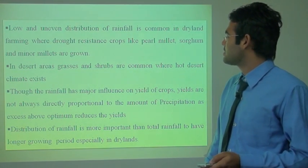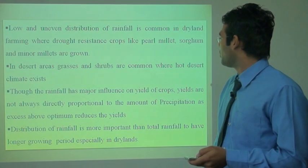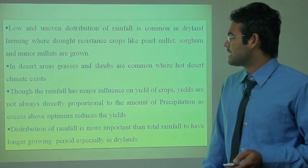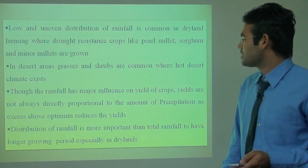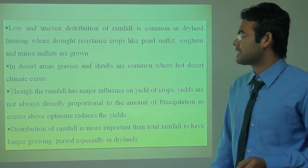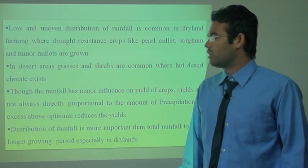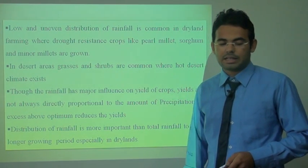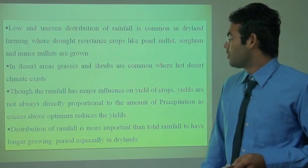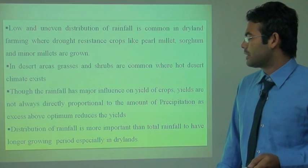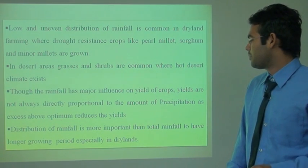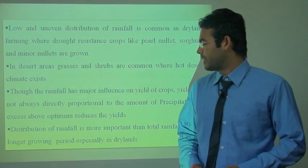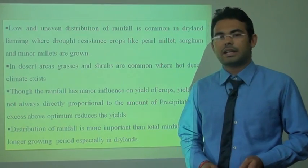In desert areas, grasses are commonly found where hot desert climate exists. Rainfall has a major influence on yield of crops, but yield is not always directly proportional to the amount of precipitation, as excess above optimum reduces yield. The distribution of rainfall is more important than total rainfall, especially for the longer growing period in dry land areas.